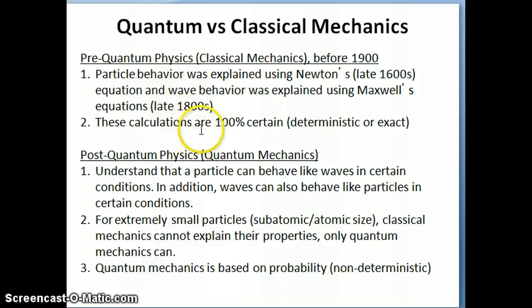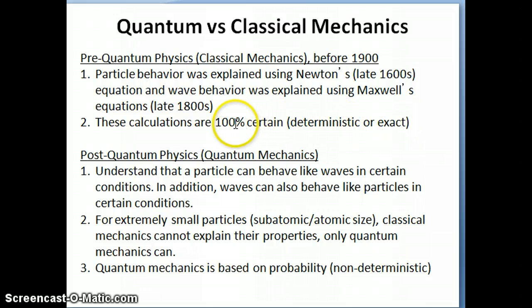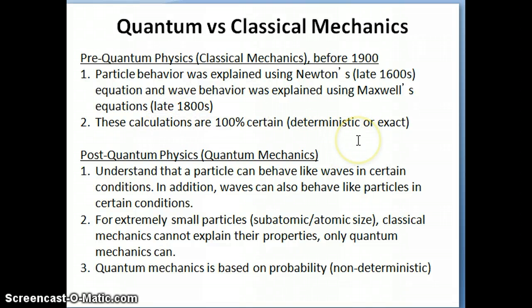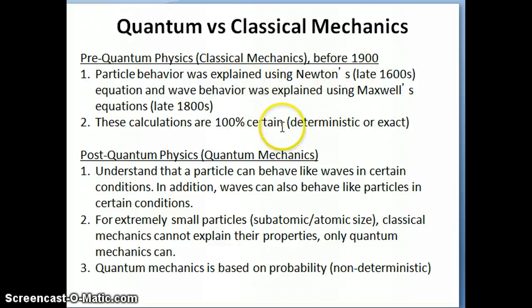One of the things that distinguishes classical mechanics is that you can make calculations that are exact, or deterministic. In other words, if I were to throw a baseball from one location to another, using Newton's equations I can calculate exactly where that baseball is going to land. Hopefully you can appreciate how powerful that is — being able to make exact predictions. That's really the distinguishing feature of classical mechanics.